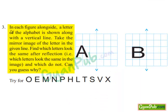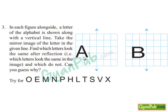The given question is: in each figure, a letter of the alphabet is shown along a vertical line. Take the mirror image of the letter in the given line. Find which letters look the same after reflection and which do not — can you guess why? Try for the letters O, E, M, N, P, H, L, T, S, V, X. Here they have given some letters and asked us to write the mirror image and check whether they are the same or not — that is, which letters are symmetrical and which are not.